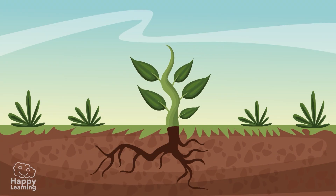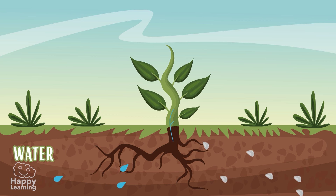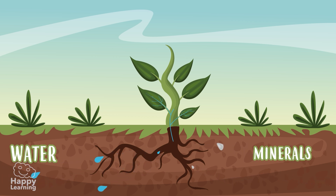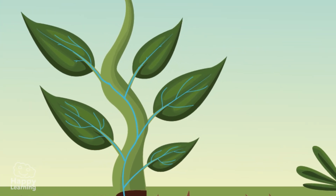Look at this plant! As you can see, its roots are anchored to the ground. And through them, the plant absorbs water and minerals in the soil. Water with minerals are then transported up the stem, reaching the leaves.